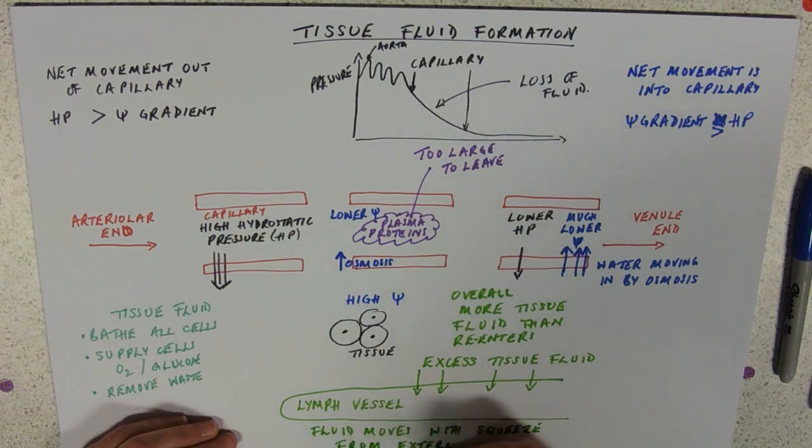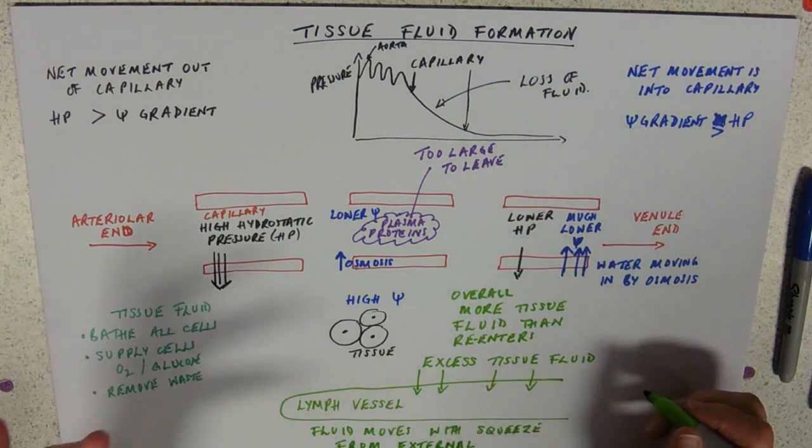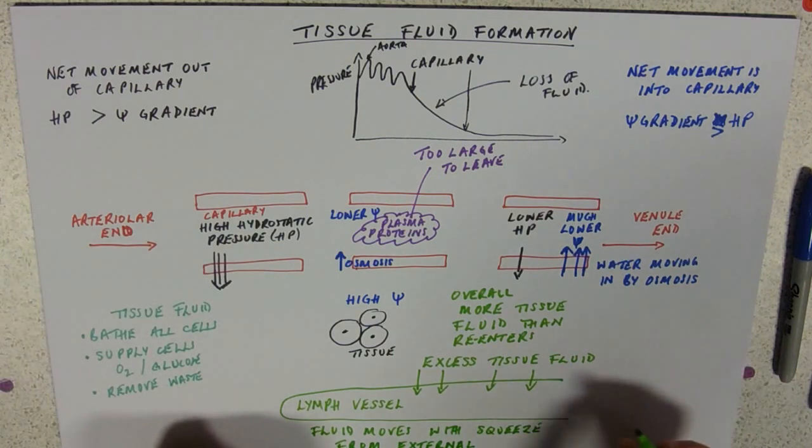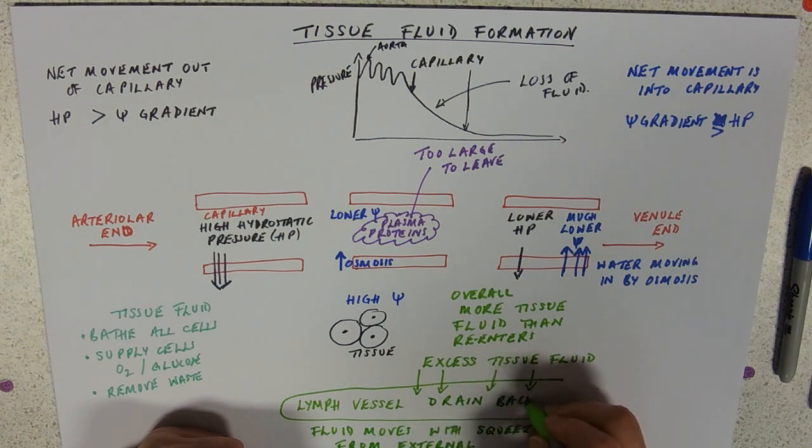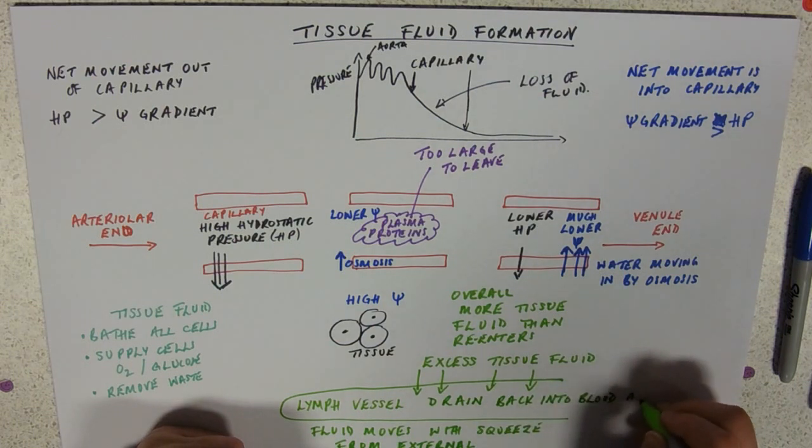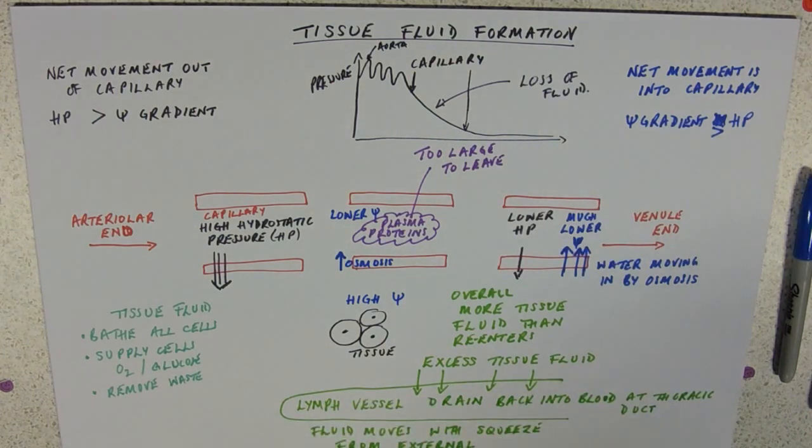The fluid moves in lymph vessels because of pressure from external muscles. When you move your leg muscles it's going to squeeze a bit of lymph along a lymph vessel and back towards the thorax. The lymph vessels return this fluid, they drain back into blood at the thoracic duct. Thoracic means thorax. This is actually a little duct just underneath your right subclavian, underneath your right clavicle. It drains into the right subclavian vein. And that is kind of it.